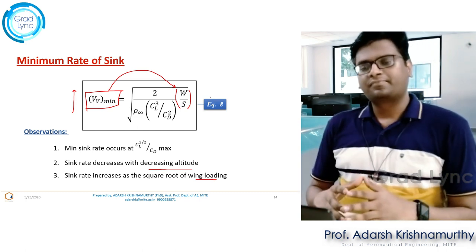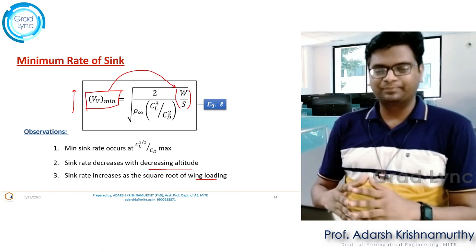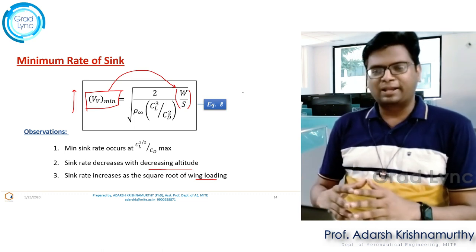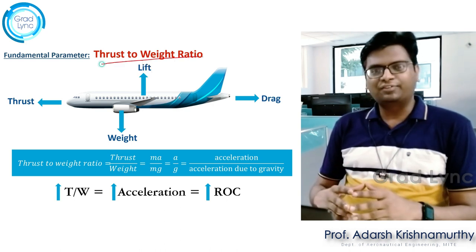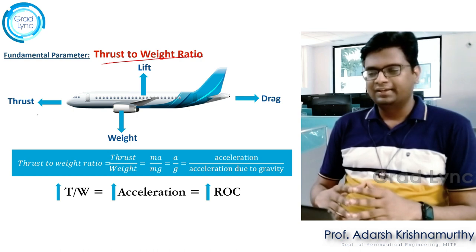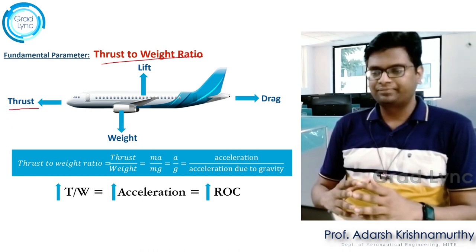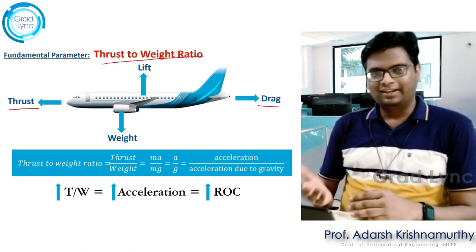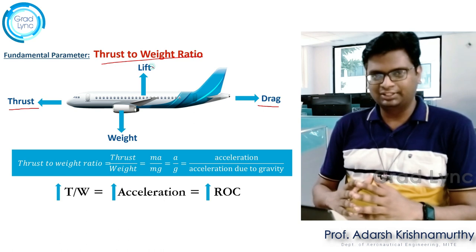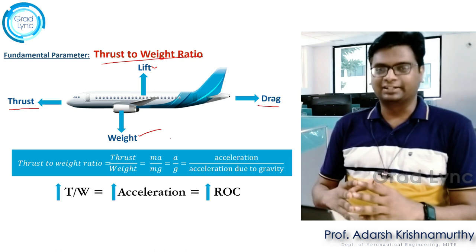Now we will try to understand some fundamental parameters used in performance analysis. The first parameter is thrust-to-weight ratio. Consider an aircraft in steady level flight: thrust is acting in the direction of the flight path, drag is opposite to thrust, lift is acting perpendicular to the free stream velocity, and weight is acting towards the center of the earth.